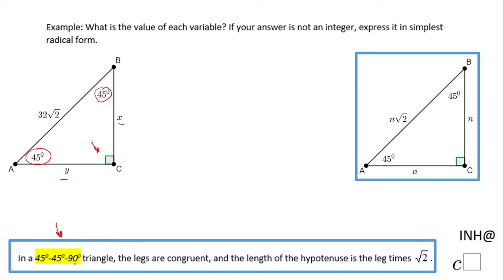In a 45-45-90 triangle, the legs are congruent, right? So we notice that also in this picture, n and n. And the hypotenuse is the leg times square root of 2. So what I usually do is look at what is given in this picture, which in this case is 32√2.